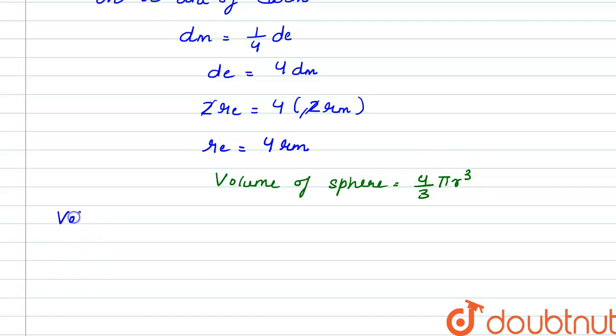So the ratio of volume of moon to volume of earth will be four by three pi rm cube divided by four by three pi re cube.